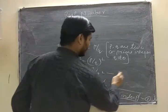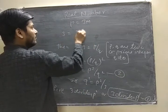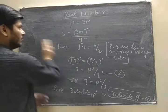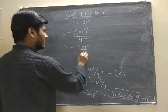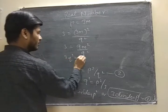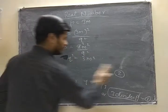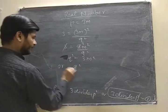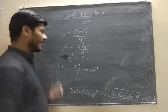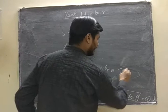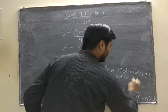Now putting this value of P in equation 2, rearrange. 3 divides Q square, or we can say that 3 divides Q.